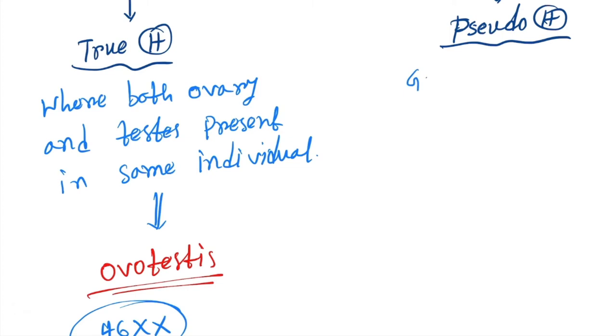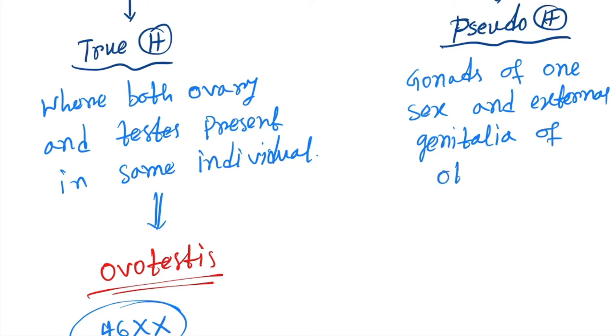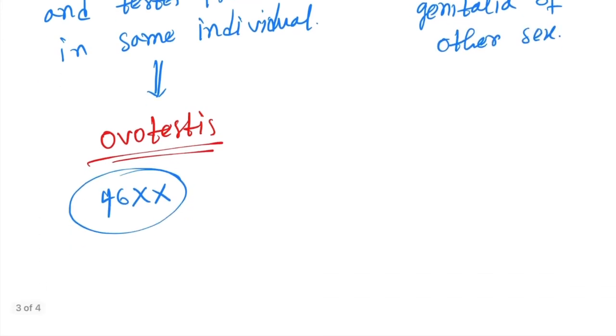Pseudohermaphroditism is the condition where gonads of one sex and the external genitalia of the other sex are present. It is of two types.